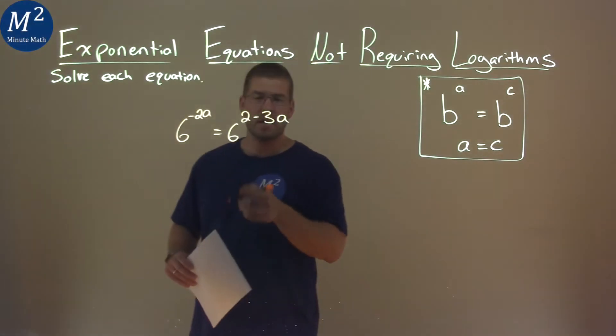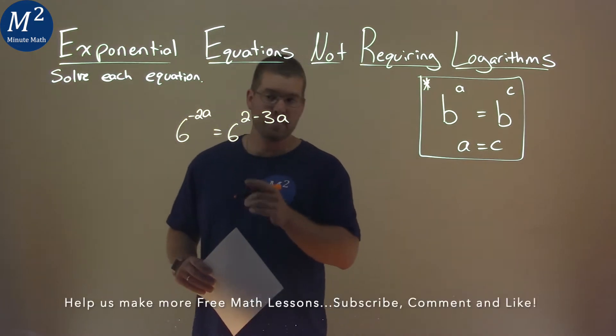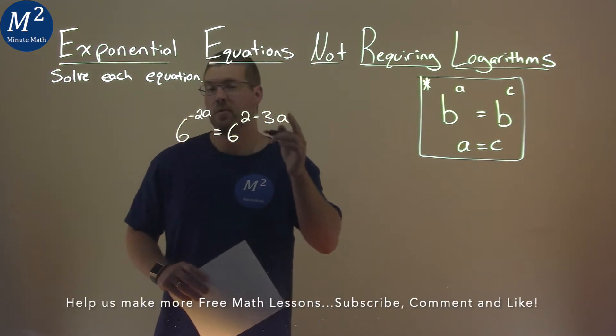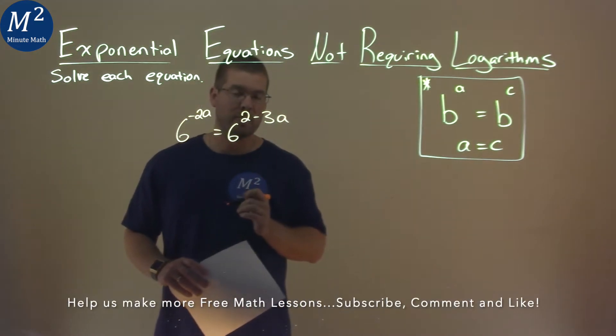We're given this problem right here, 6 to the negative 2a power is equal to 6 to the 2 minus 3a power and we need to solve this equation.